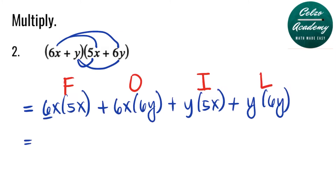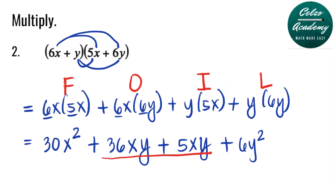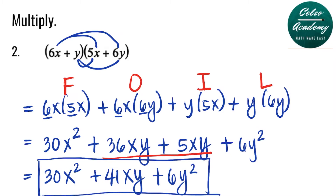Simplifying: 6 times 5 is 30, and x times x is x squared because we add powers 1 and 1. Second term: 6 times 6 is 36, with variables xy. Plus, y times 5x is 5xy. Plus, y times 6y is 6y squared, adding exponents 1 and 1. Combining like terms 36xy and 5xy gives 41xy. So the final answer is 30x squared plus 41xy plus 6y squared.